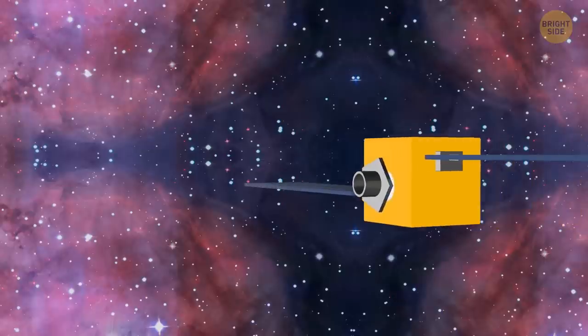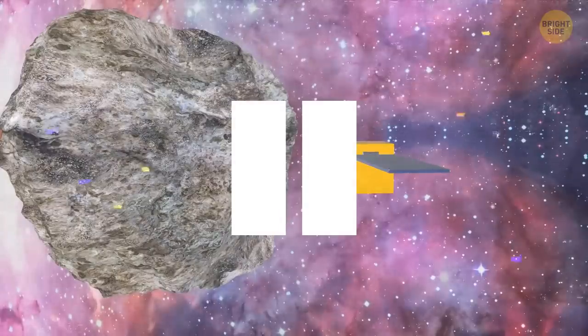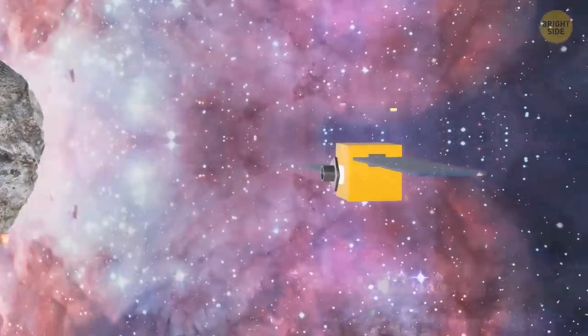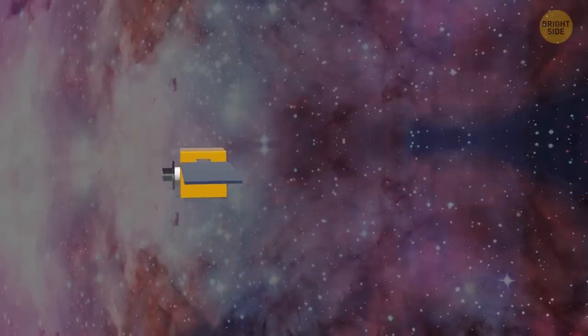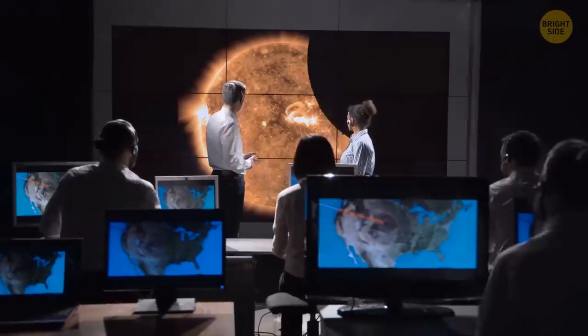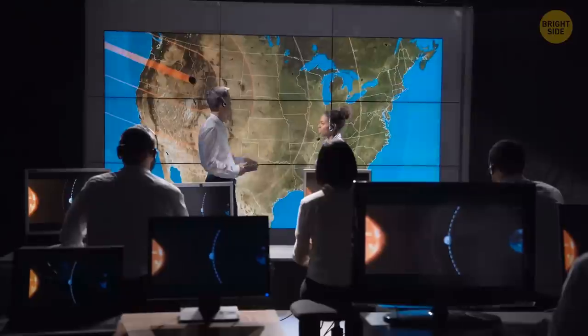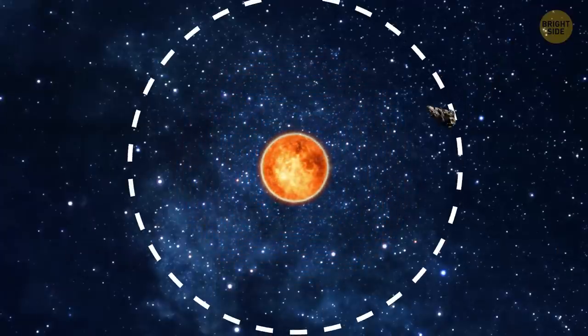Bam! The spacecraft crashes into the asteroid at full speed. What are your predictions? Asteroid explodes and is blown to pieces? Or asteroid flies off the main body into space like a billiard ball? Well, scientists predict that this collision will reduce the speed of this small asteroid by a fraction of a percent. But it'll still be enough to reduce its orbital period by a few minutes.